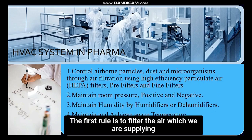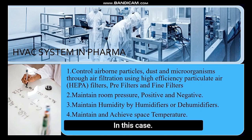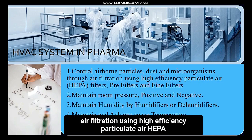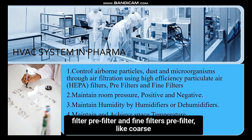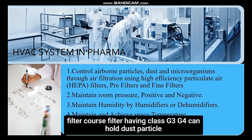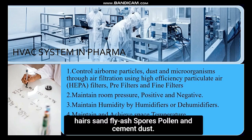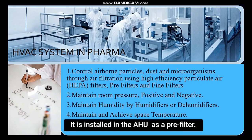The first rule is to filter the air which we are supplying to the production area. We control airborne particles, dust and microorganisms through air filtration using HEPA filters, pre-filters and fine filters. Pre-filters, like coarse filters of class G3 and G4, can hold dust particles bigger than 10 microns — such as insects, textile fibers, hairs, sand, fly ash, spores, pollen and cement dust. These are installed in the AHU as a pre-filter.